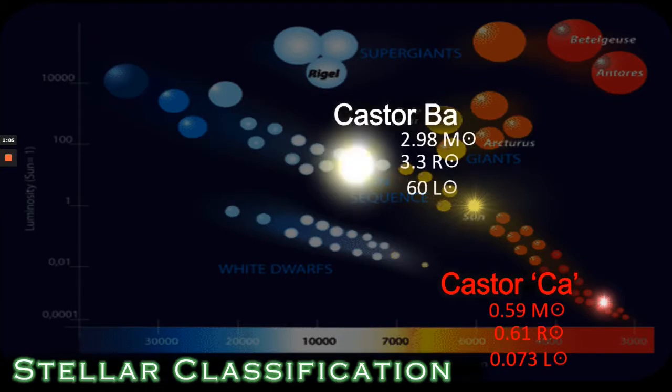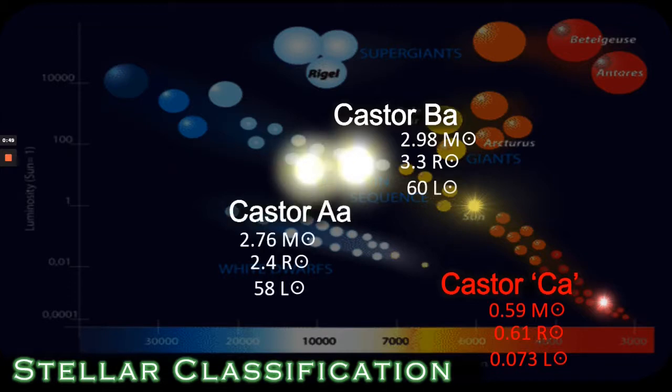Next the Castor BA star which is the largest of the system at 2.98 solar masses and 3.3 solar radii has 16 solar luminosities. Interestingly BA is a larger star than AA but AA having a smaller radius as we can see here is actually hotter which moves it slightly to the left on the main sequence. AA has some 2.4 solar radii and 58 solar luminosities.